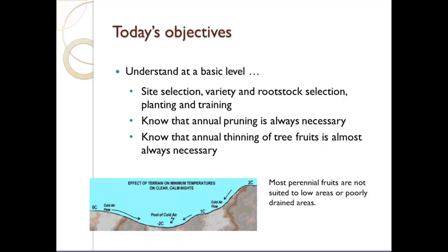When talking about site selection, for most of our perennial tree fruit and small fruit, we are looking to place these plants in premium sites. If you're wanting to be sustainable, you want to be in premium ground. Most perennial fruit are not suited to low areas or poorly drained areas. You'll see tree fruit, particularly in the south where they have peaches and European grapes, on hillsides for good air drainage — not at the bottom where cold air pools. You're really looking for relatively frost-free areas.